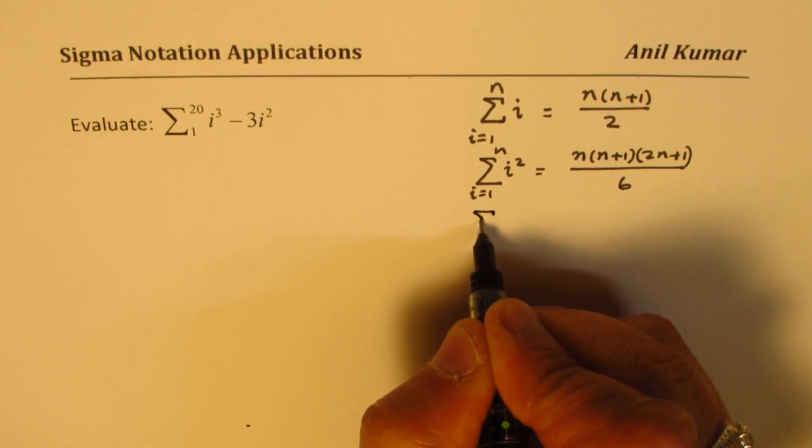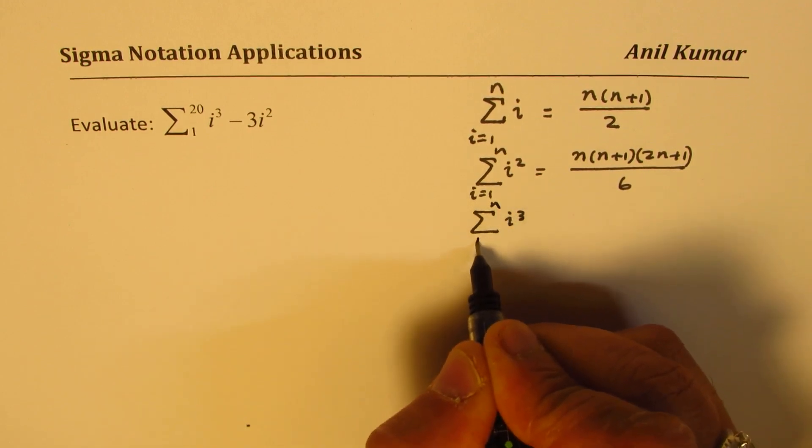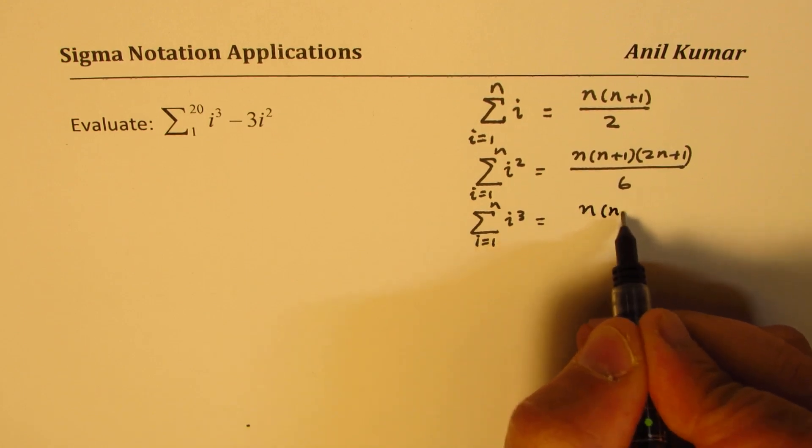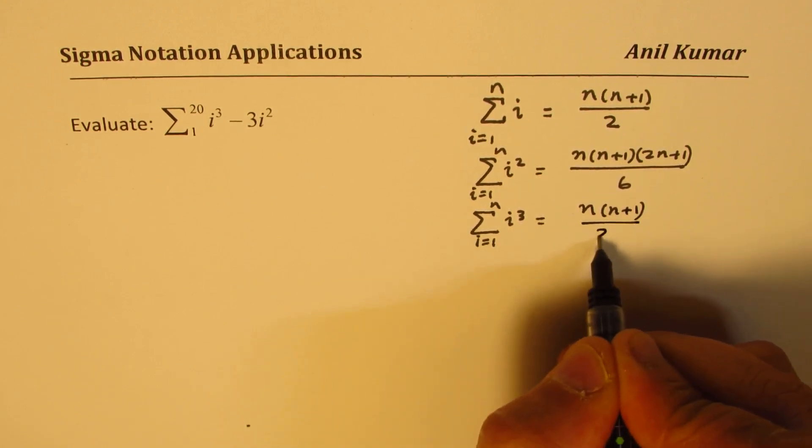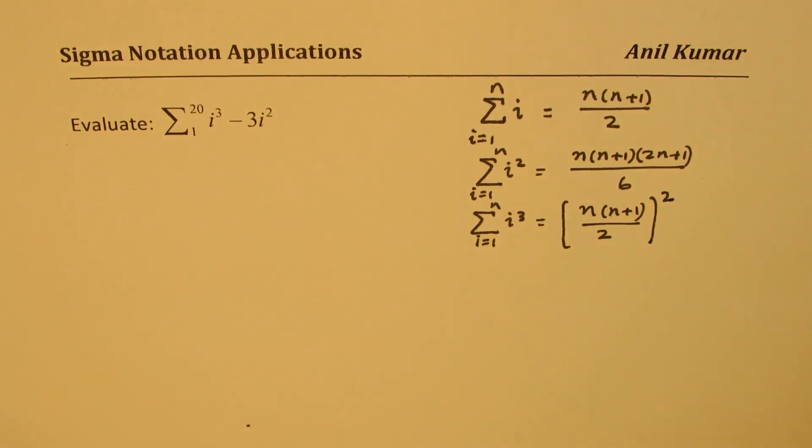And for the cube, for i equals 1 to n is square of this, which is n times n plus 1 over 2 whole square. So these are standard formulas which you should remember to solve such questions.